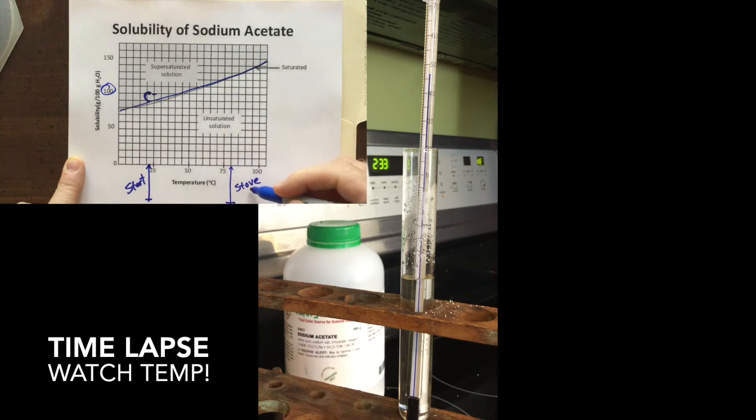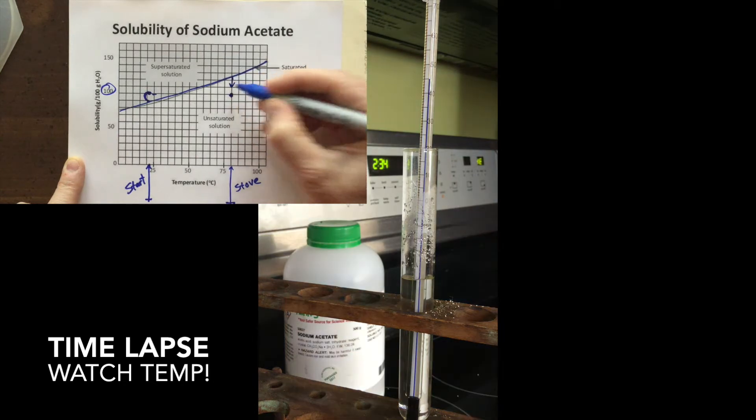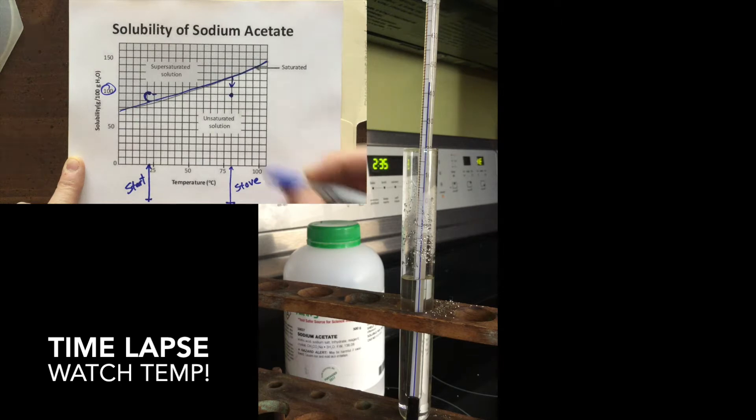And so when we turned it up on the stove to 80 degrees, we were right here. We were actually underneath this line. And when you're underneath the line, you're actually unsaturated. It could hold more salt. Then as it was above or beneath that line, we let it cool down. And that's what you're watching right now.